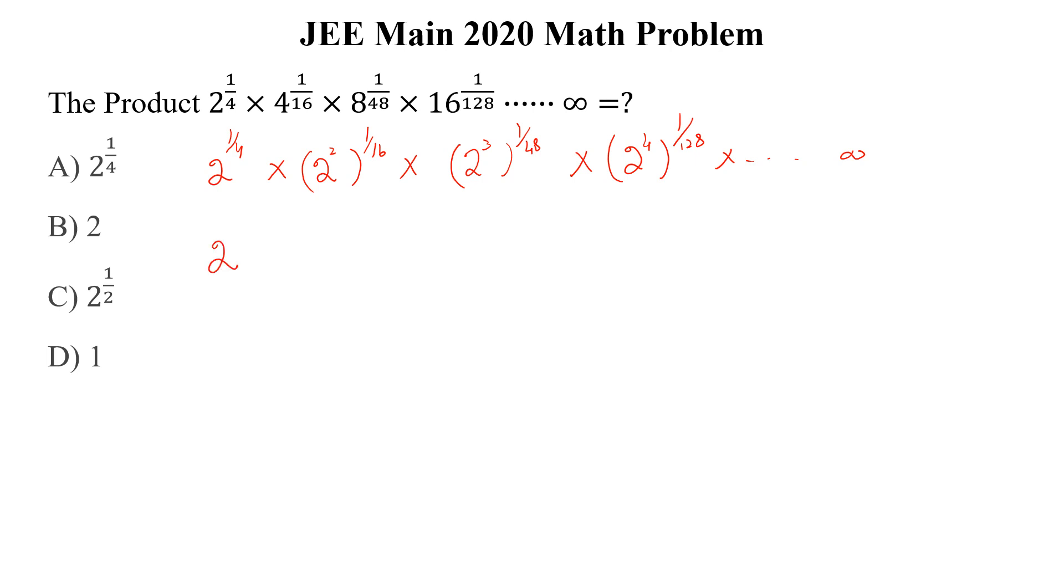Now we can simplify a little bit more and we can write 2 to the power 1 by 4 multiplied by 2 to the power 1 by 8 multiplied by 2 to the power 1 by 16 multiplied by 2 to the power 1 by 32, up to infinity.